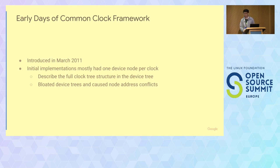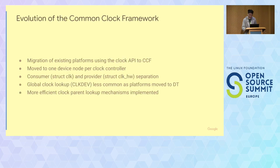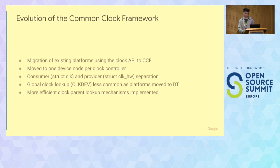This unfortunately bloated the device trees a lot and you'd spend a lot of CPU time parsing device trees. Normally clock hardware would have multiple clocks fitted into one register, so you'd also have node address conflicts within your device tree. Later on the clock maintainers evolved the common clock framework, notably asking many platforms to slowly move from their own custom implementations, and moving everyone from one device node per clock to one device node per clock controller IP block.